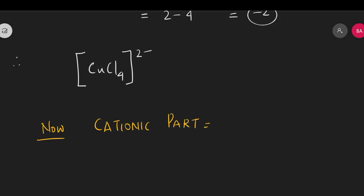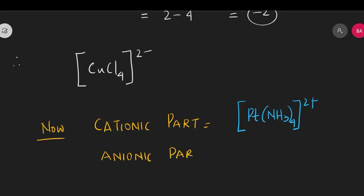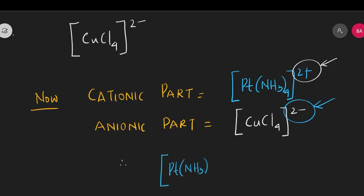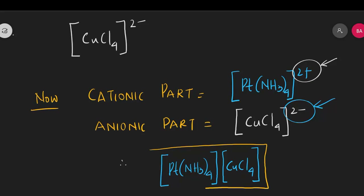Now let's bring the cations and anions together. The cationic part is [Pt(NH₃)₄]²⁺ and the anionic part is [CuCl₄]²⁻. The charge on the cation is plus 2 and on the anion is minus 2, so the charges are equal in magnitude. We can simply write the entire formula of the complex as [Pt(NH₃)₄][CuCl₄], which is the formula of this coordination complex.